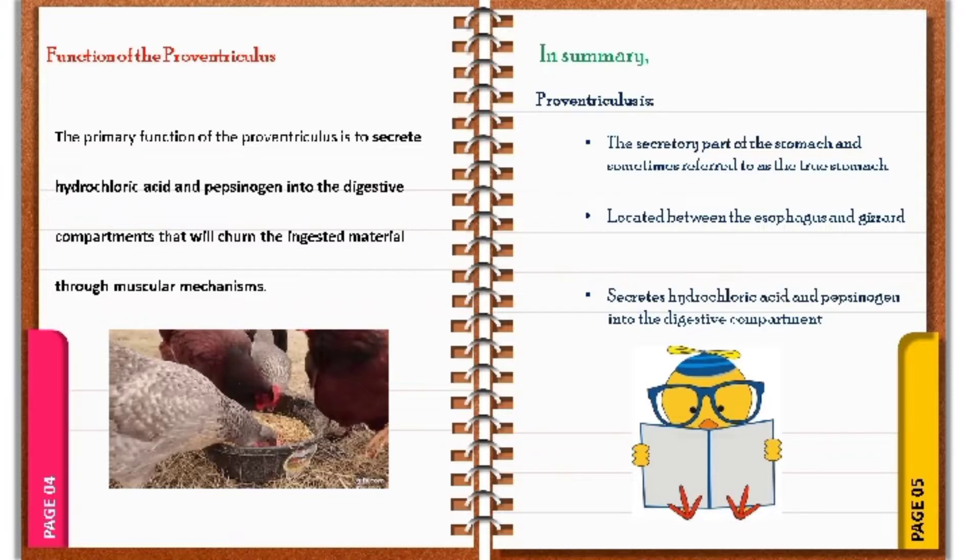In summary, Proventriculus is first, the secretory part of the stomach and sometimes referred to as the true stomach. Second, it is located between the esophagus and the gizzard. And lastly, it secretes hydrochloric acid and pepsinogen that help churn the ingested material.